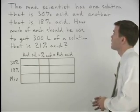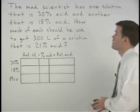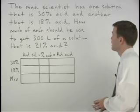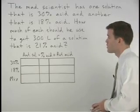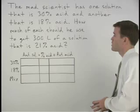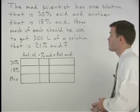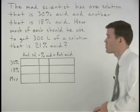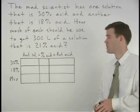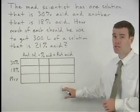The mad scientist has one solution that is 30% acid and another that's 18% acid. How much of each should he use to get 300 liters of a solution that's 21% acid? Well let's start things off by setting up a chart.